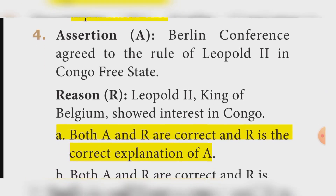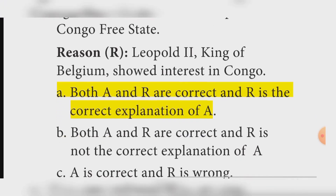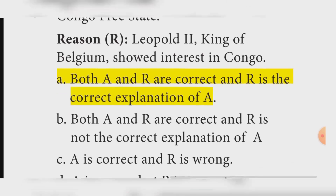Assertion-Reason, question four: Assertion — The Berlin Conference agreed to the rule of Leopold II in the Congo Free State. Reason — Leopold II, King of Belgium, showed interest in Congo. Answer: Option A — Both Assertion and Reason are correct, and Reason is the correct explanation of Assertion.